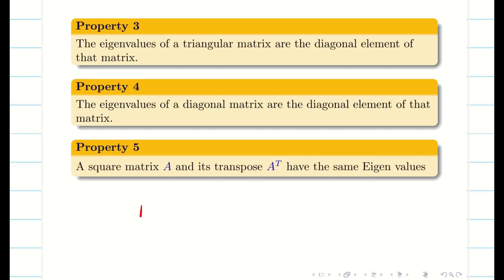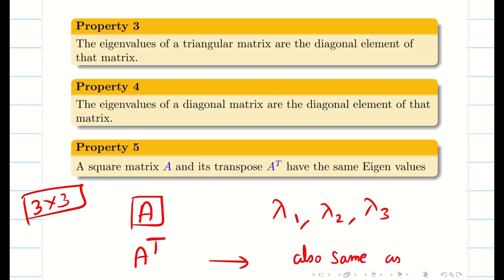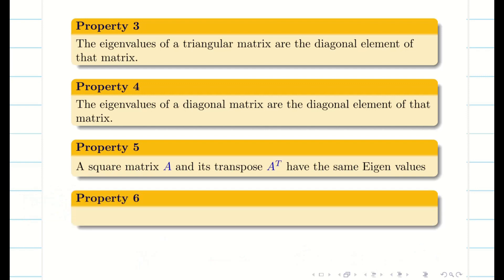The next property: if A is a square matrix with eigenvalues lambda 1, lambda 2, lambda 3 — for a 3x3 matrix — then when you transpose the matrix, whether it is symmetric or non-symmetric, it does not matter. The eigenvalues of A transpose are the same as those of A. So a square matrix A and its transpose have the same eigenvalues.